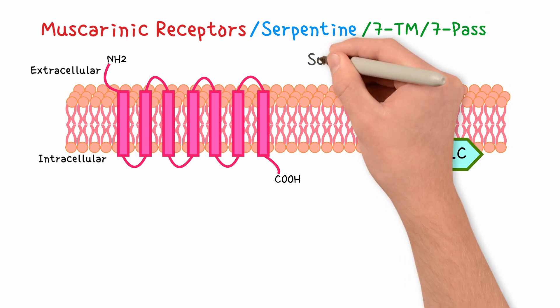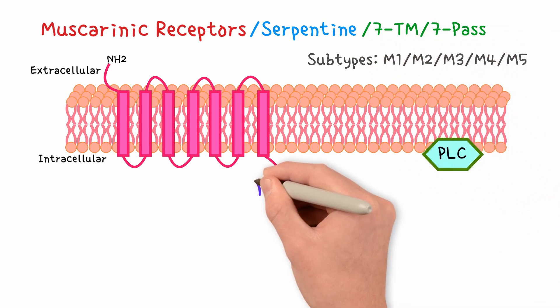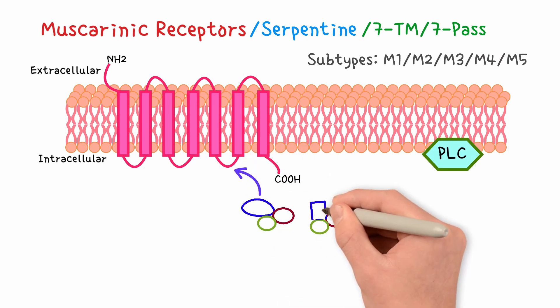There are five subtypes. M1, M2, M3, M4, and M5. The third intracellular loop of these receptors has a specific shape. This loop determines which G protein it will grab inside the cell. This is the key to their function.